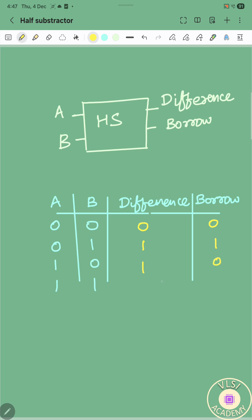And when both inputs are 1, at that time difference will be 0 and borrow will also be 0. Now let us try to draw one K-map corresponding to this half-subtractor. In K-map, we apply 1 wherever difference output was coming as 1 in our truth table earlier.